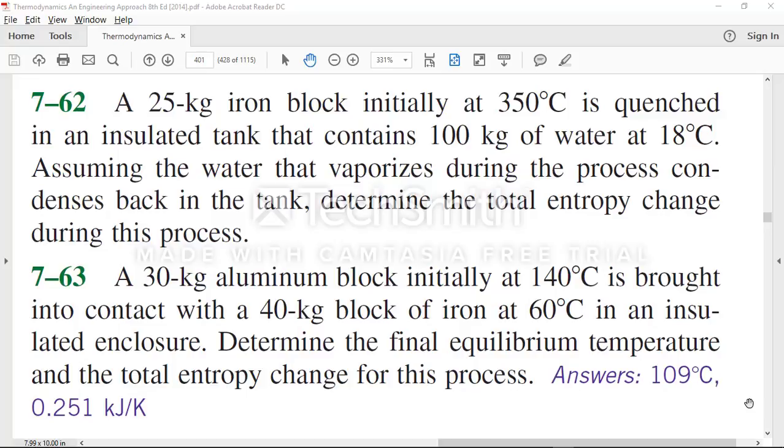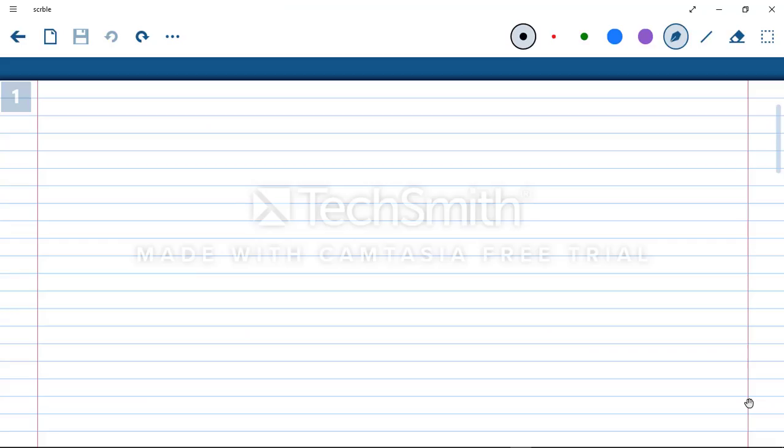The question asks us to determine the total entropy change during this process. To start, we need to define what our system is. We have a tank of water with an iron block in it. We can treat that entire tank with the block as our closed system.